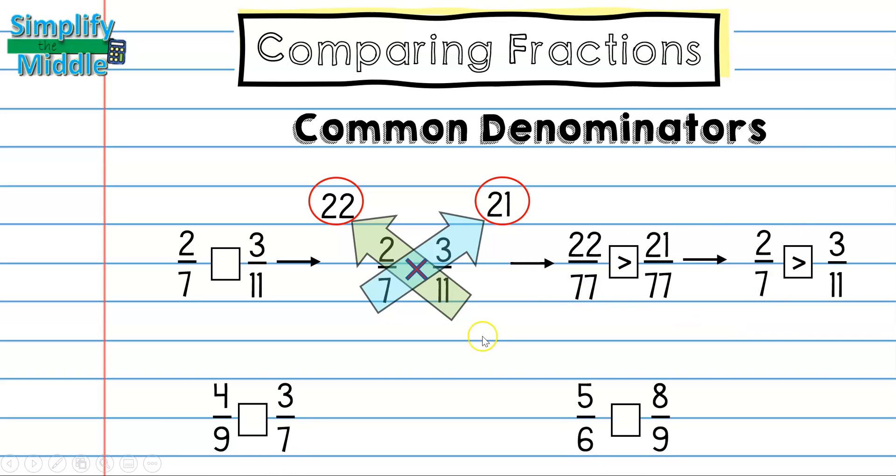Let's try a couple more. Down here we see that we have 7 times 4, which is 28, and 9 times 3, which is 27. So I can see, when I'm comparing them, that 28 is greater than 27, so 4 ninths is greater than 3 sevenths.